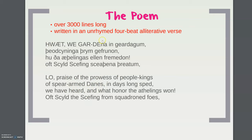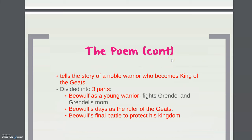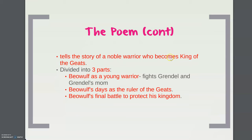The poem tells the story of a noble warrior who becomes king of the Geats, and it's divided into three parts. The first part is Beowulf as a young warrior, where he fights Grendel and Grendel's mother. The second part covers his days as the ruler of the Geats. And the last part of the poem is his final battle to protect his kingdom against a great dragon.